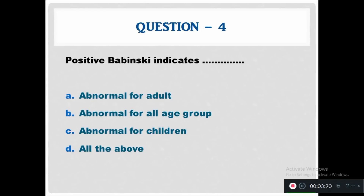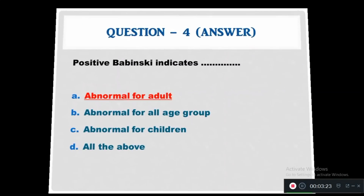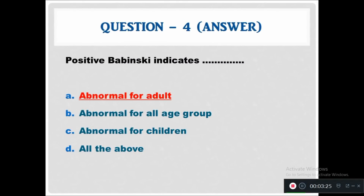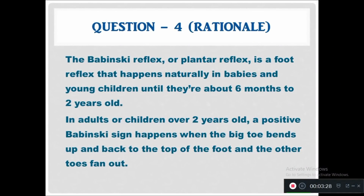Question 4: Positive Babinski indicates — abnormal for adult, abnormal for all age groups, abnormal for children, or all of the above. The answer is abnormal for adult. The rationale: the Babinski reflex happens naturally in babies and children until about 6 months to 2 years old. In adults or children over 2 years old, a positive Babinski sign — where the big toe bends up and back and the other toes fan out — is abnormal.